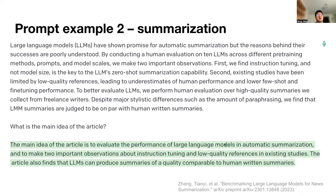The model is able to say the main idea of the article is to evaluate the performance of large language models in automatic summarization, and make two important observations about instruction tuning and low-quality references in existing studies. The article also finds that language models can produce summaries of quality comparable to human-written summaries. You can see that really helps humans understand a big chunk of text in a short amount of time.